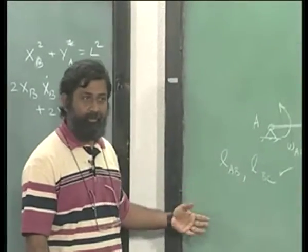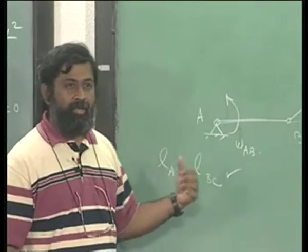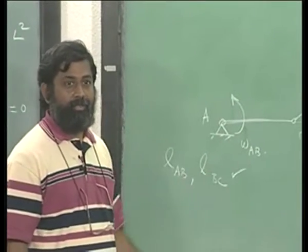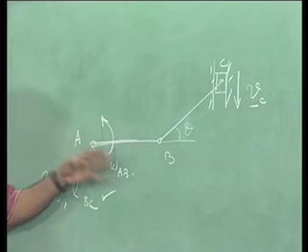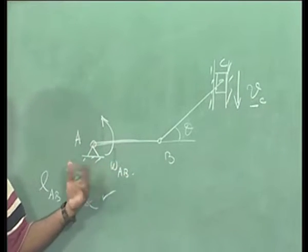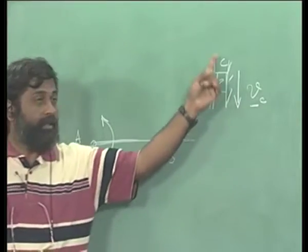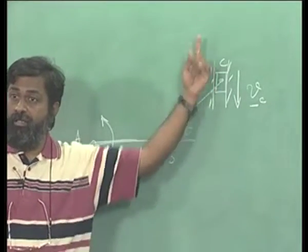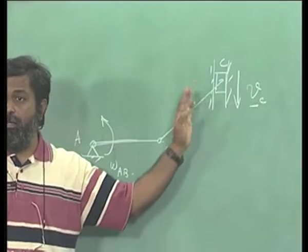Let's look at another problem so that we can get familiar with some of these problems. Here let's say the rod AB is rotated, the link AB is rotated by moving this bar or block